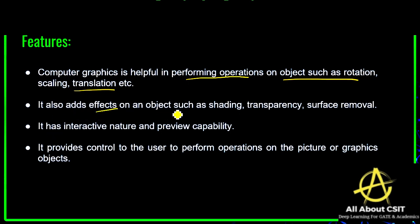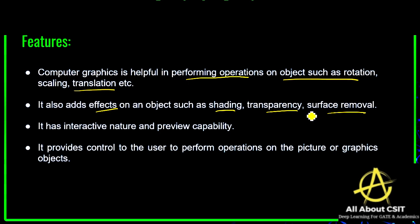It also adds effects on an object such as shading, transparency, and surface removal. If your picture is on your system, you can change your display of that picture. On your mobile phone, you can shade your picture, make it black and white, give a shade to the picture, change the background, and change the skin tone — all because of computer graphics.